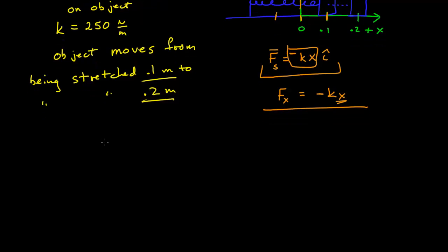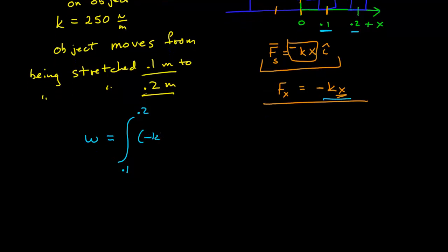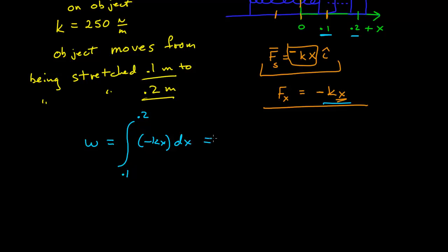We can now calculate the work as the object goes from xi = 0.1 m to xf = 0.2 m, integrating the x-component of the force: W = ∫₀.₁^0.2 (-kx) dx = -k [x²/2] evaluated from 0.1 to 0.2. With k = 250, this gives -250 × (0.04/2 − 0.01/2) = -250 × 0.015 = -3.75 joules.